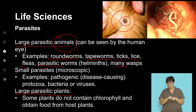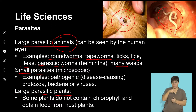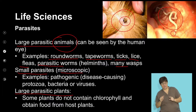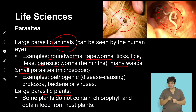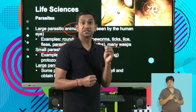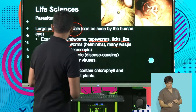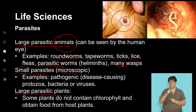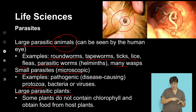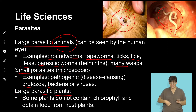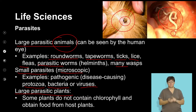We also have much smaller parasites that cannot be seen — microscopic parasites — and these are often pathogenic. For example, some viruses and bacteria cannot be seen with the naked eye. These include protozoans such as malaria parasites, as well as bacteria that cause gastrointestinal infections, and viruses that are parasitic.